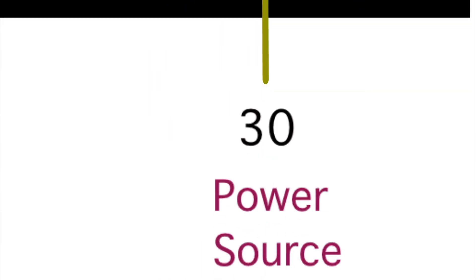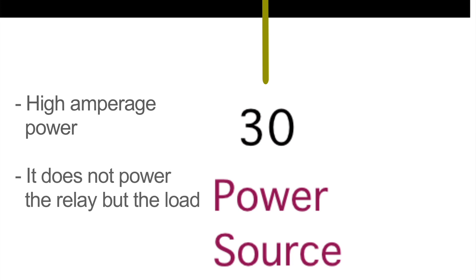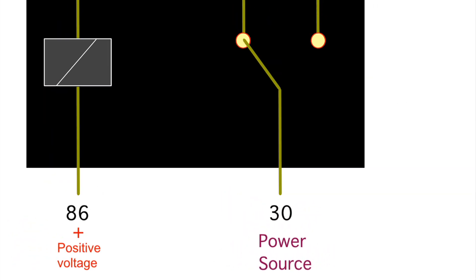Finally, the last pin is pin number 30, our power source. It's important to understand that on pin 30 this is that high amperage power coming into the relay. It's not there to power the relay, but to power the load at the end of 87.